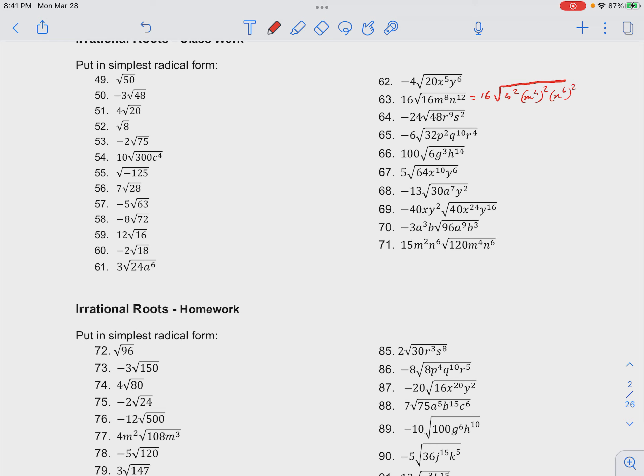So notice that we can cancel the squares with the square root for all these terms, which means that we have 4 times m to the 4th times n to the 6th. And 16 times 4, simplifying that will be 64, m to the 4th, n to the 6th as our simplified form.